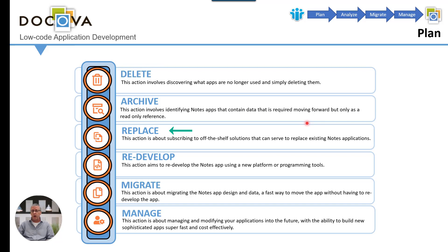Replacing. You might look to off-the-shelf products to replace a CRM, ERP system, or project management application that you might have been doing in Notes. You pay a subscription and sign up for something like Monday.com or Salesforce. We call that replacing. Redeveloping. Sometimes you have a complex Notes app that doesn't really fit anywhere — it's specific to the way you do business, a bespoke custom application. Lots of companies have those, especially in the Notes and Domino world, and you might opt to redevelop some of those.